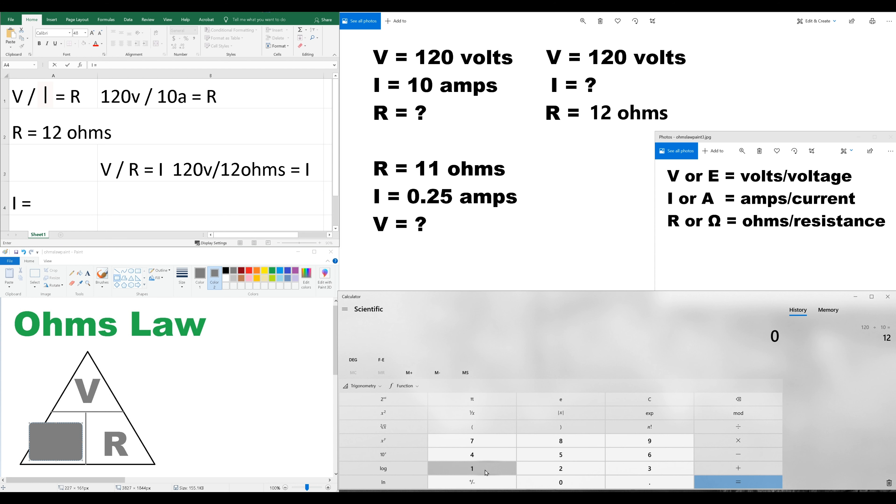Surprise, surprise. 120 divided by 12 is going to give us 10. 10 amps. So, that proves that no matter which way we use this formula, we'll still get the same answer. So, we can verify answers by just changing up what we're solving for.